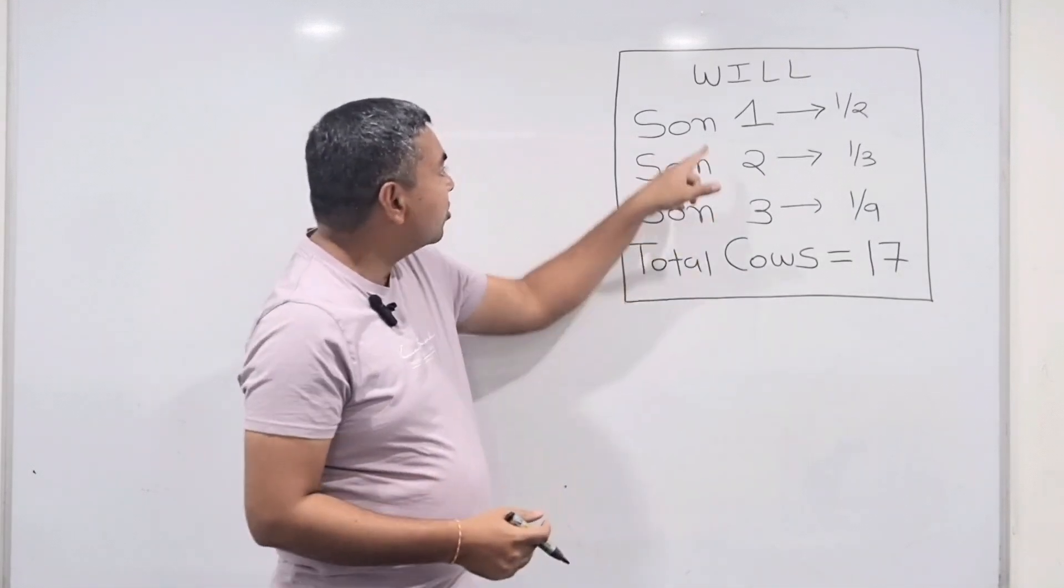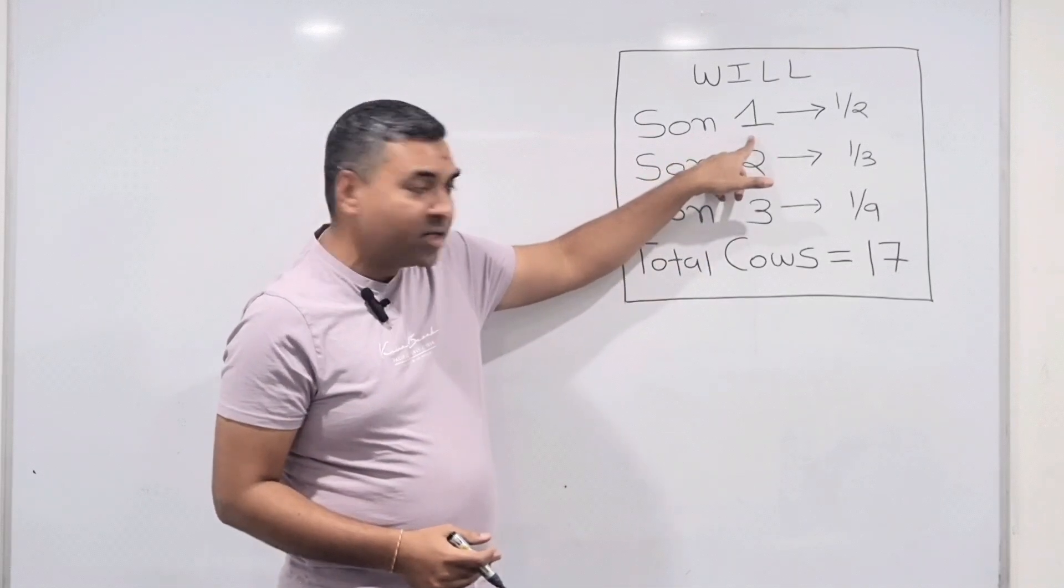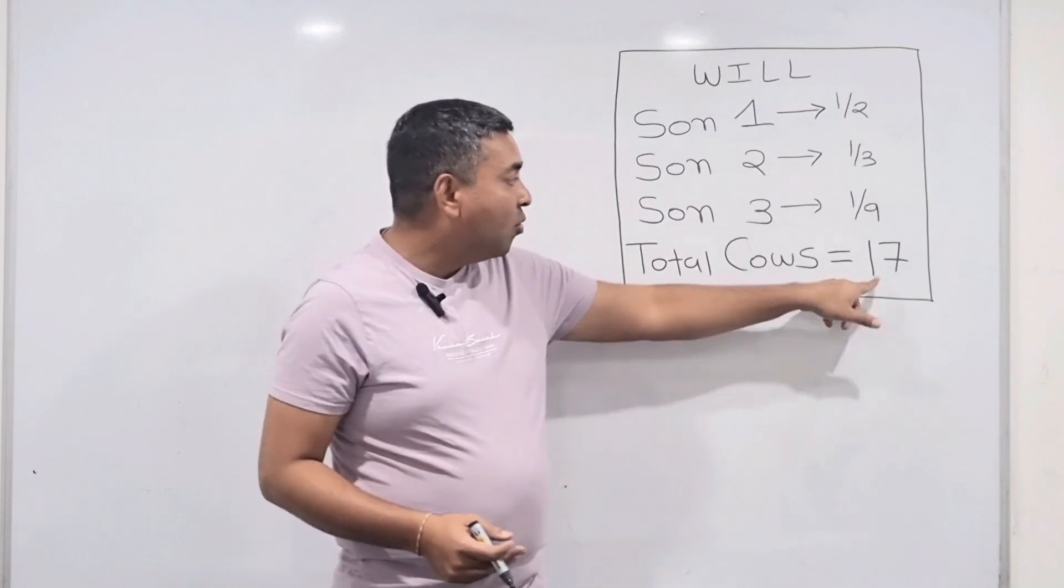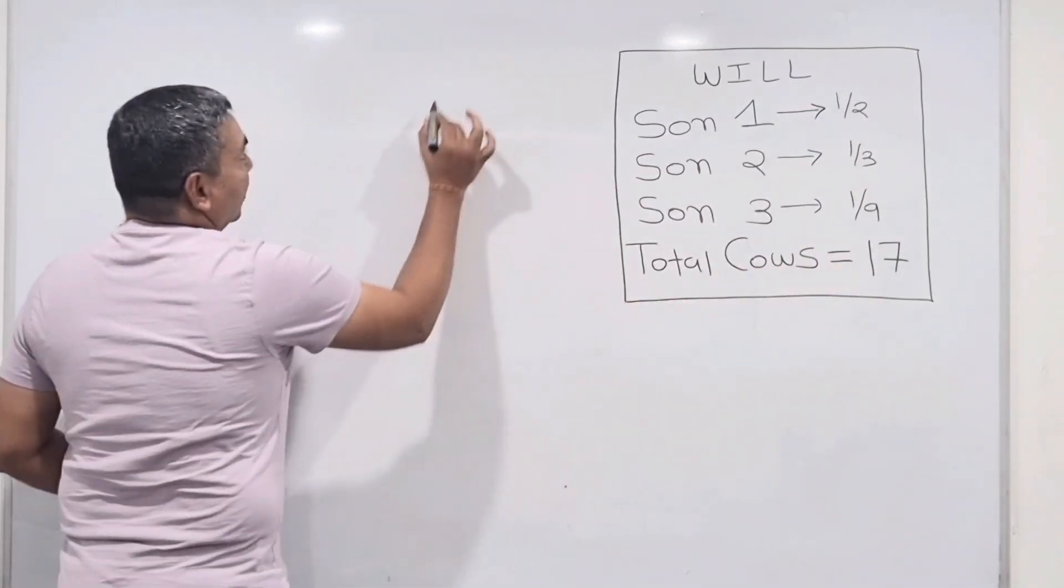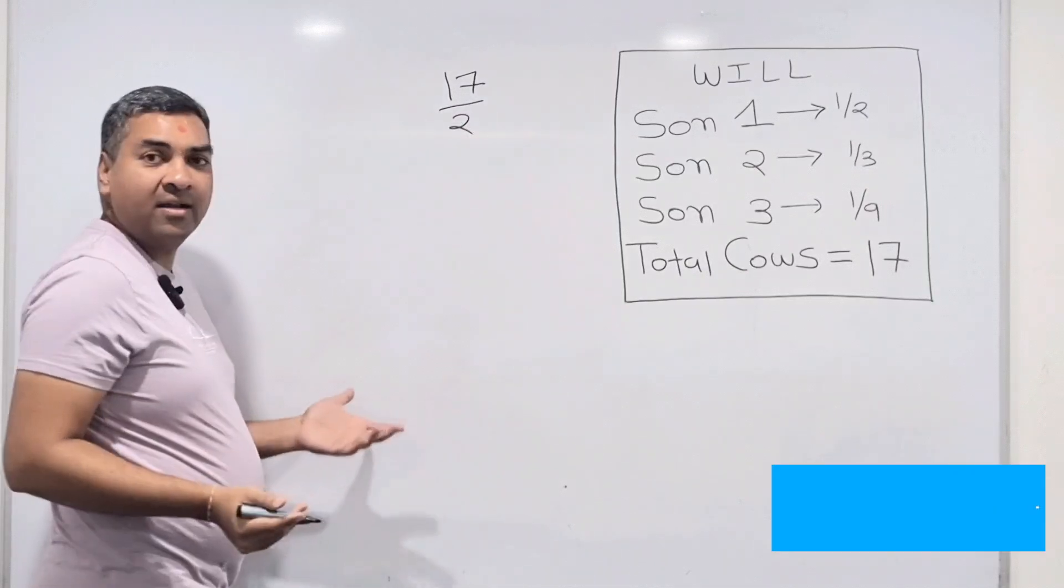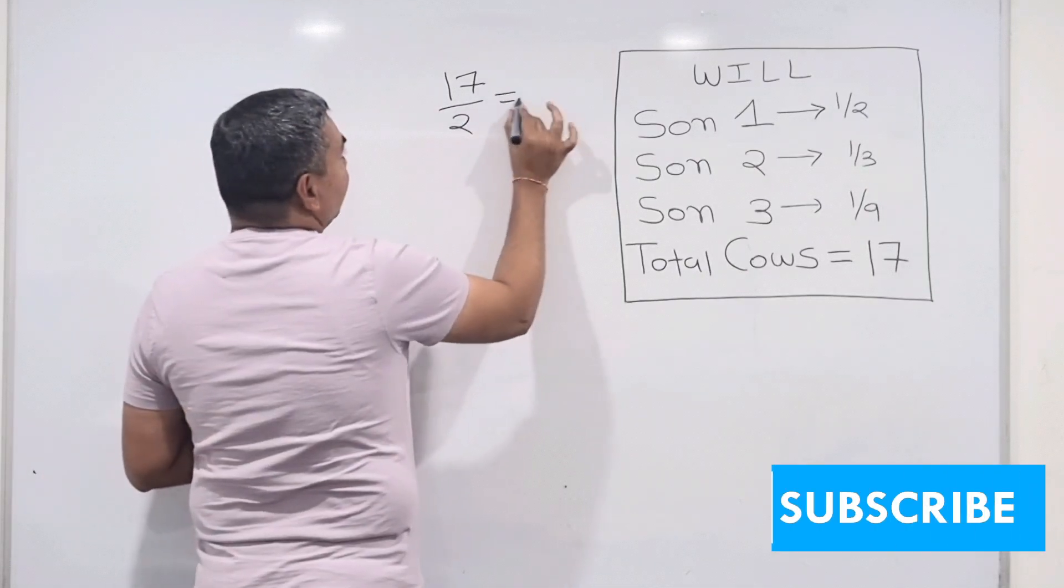Let's say we are talking about son number one. The oldest one should be getting one half. If you do one half of 17, if you do 17 divided by 2, what do we get? We get 8.5.